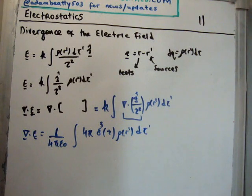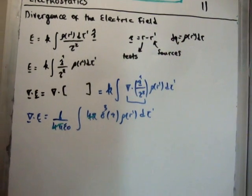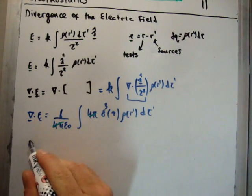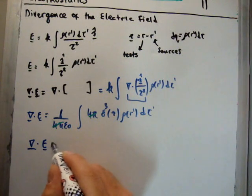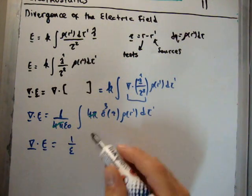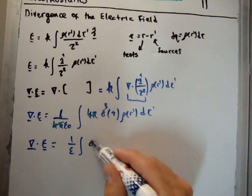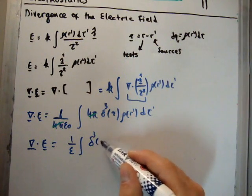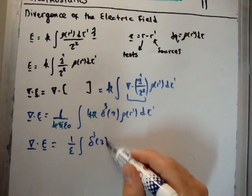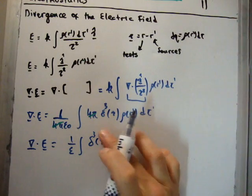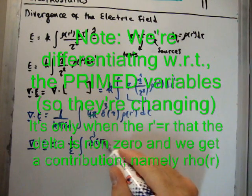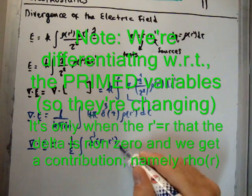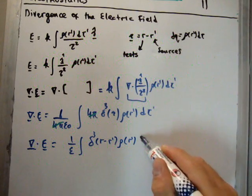Of course, the 4π's will cancel. So, close to the end, what we're left with is that the divergence of the electric field equals 1 over epsilon 0, the integral of the three-dimensional Dirac delta function with respect to the separation vector, but we can rewrite the separation vector as r minus r prime, and then we have ρ of r prime d tau prime.